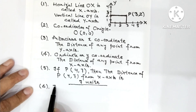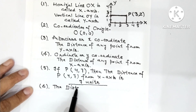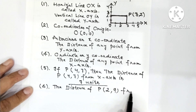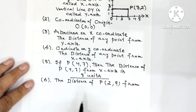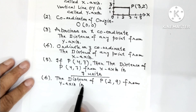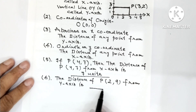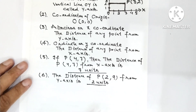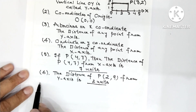Now another question: the distance of point P with coordinates (2, 9) from the Y-axis is? So here it is asked for the abscissa. You can write that it is 2 units, because the distance of any point from the Y-axis is called abscissa.